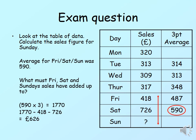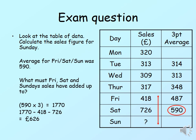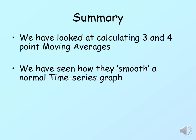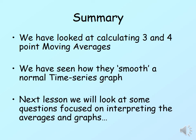Hopefully that's been a nice straightforward topic. The procedure is just remembering to do the three or four point groups — you exclude one and move on to the next set. That is the end of the session. In this session we've looked at three and four point moving averages and seen whether the series is smooth or not. In the next lesson we'll be looking at interpreting these averages in more detail.